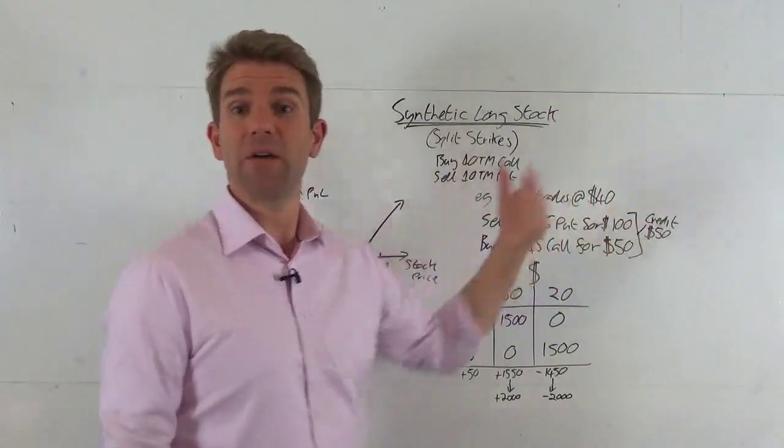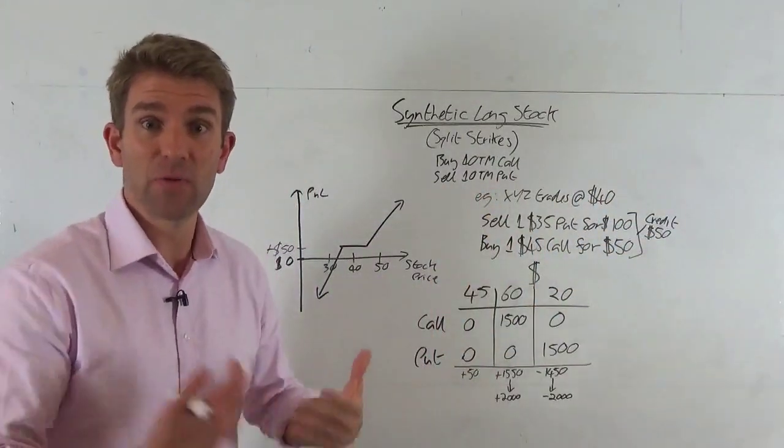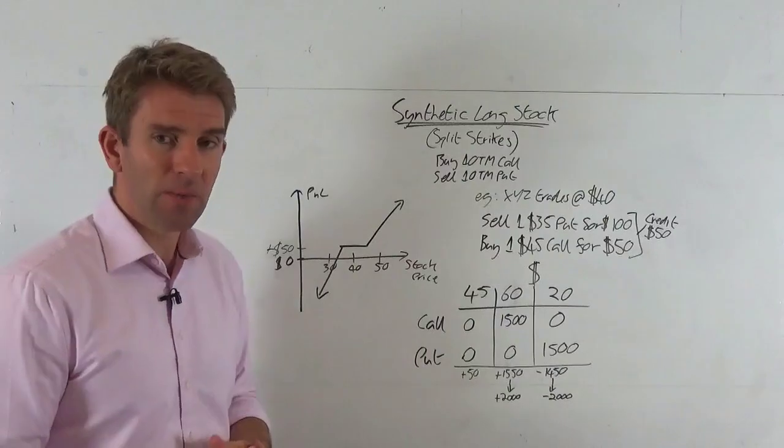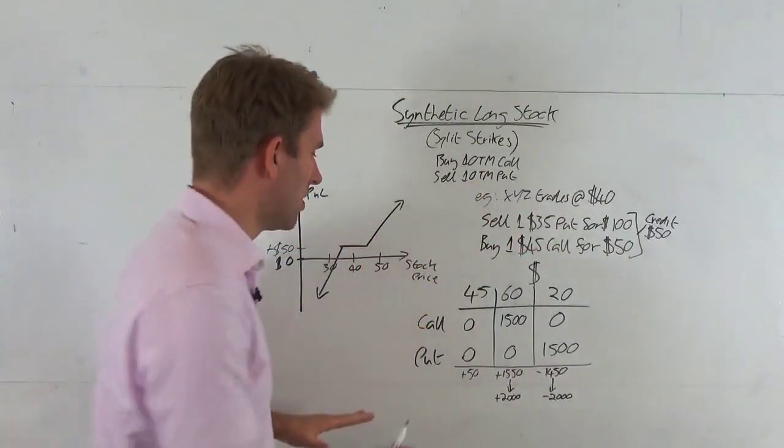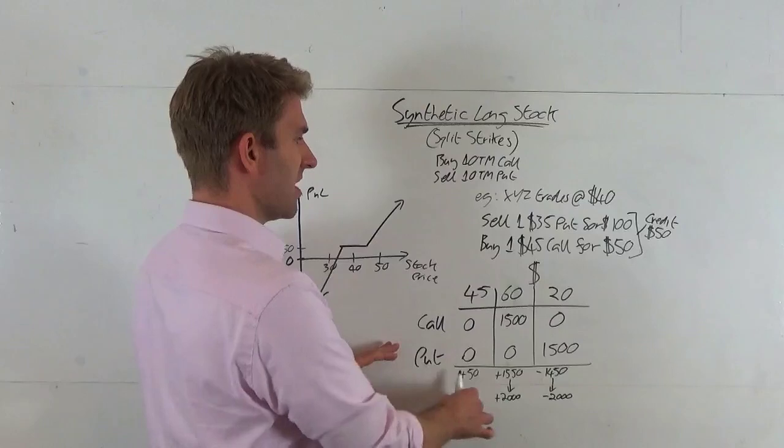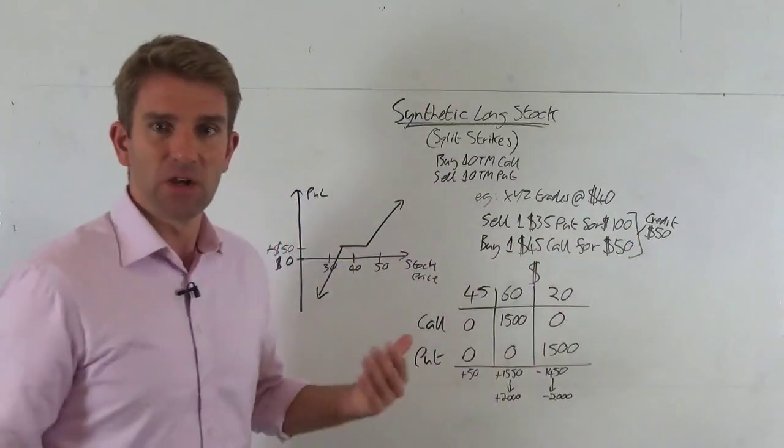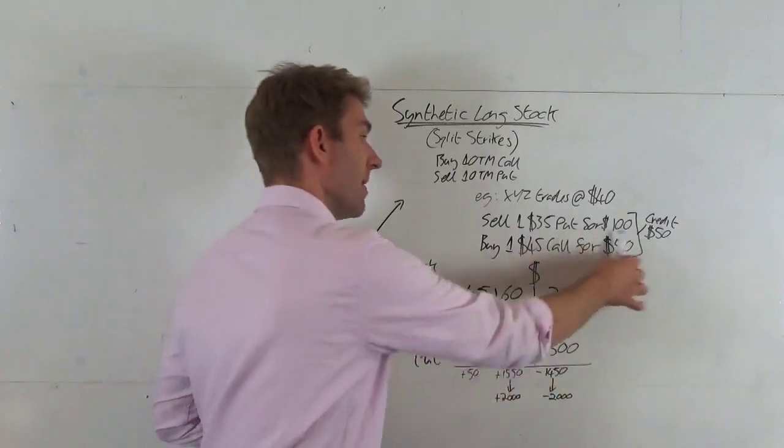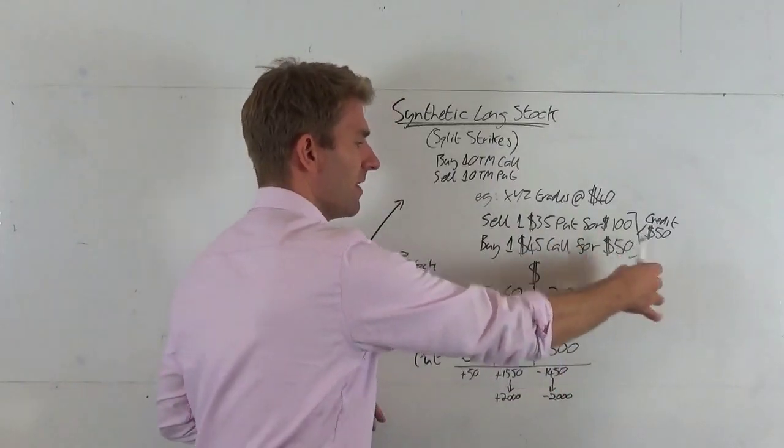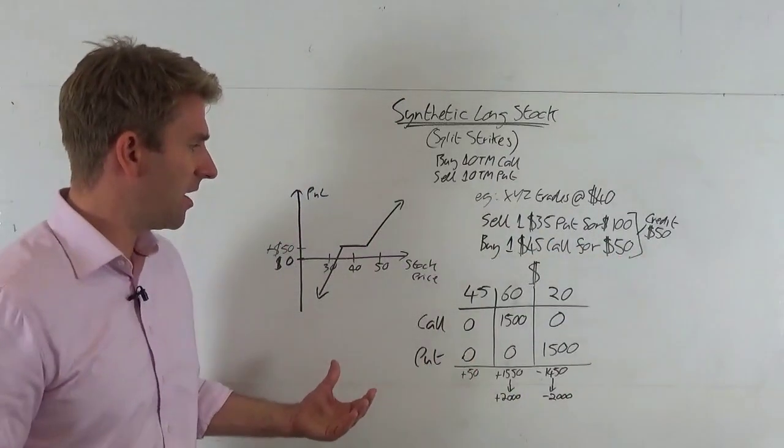Effectively we get nothing for that. We've received 50 dollars for that so we get 50 back, we get our credit, we made 50 dollars on the deal per contract. Let's just look at the math to make sure. That's worthless, that's worthless, we've made 100 there, it's cost us 50, we can see that it's 50. We've made 100, it's given out 50, we've had 50 back.